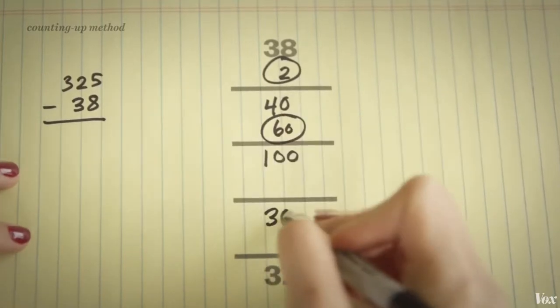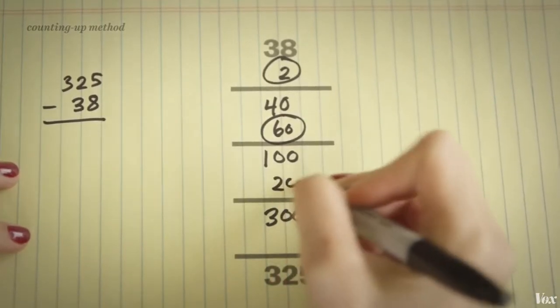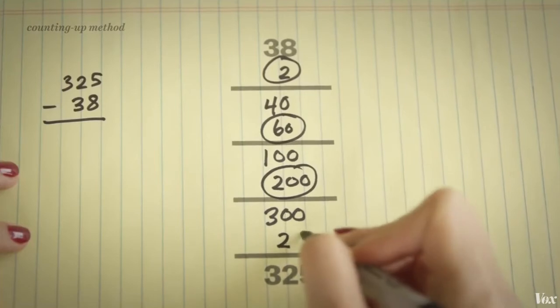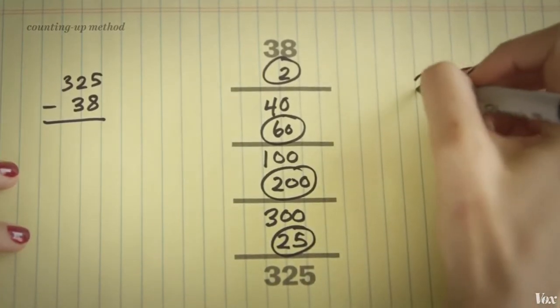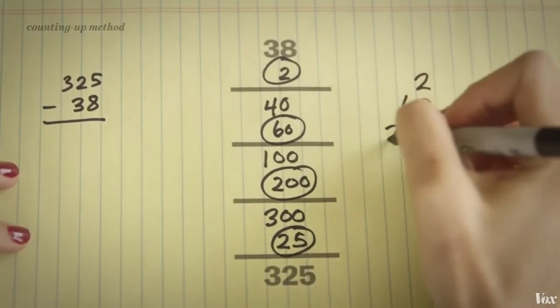You go up to the next hundred, then you need to go to 325. So the distance between 38 and 325 are these numbers that I've circled.